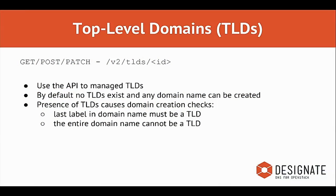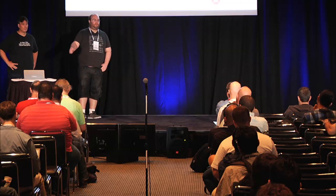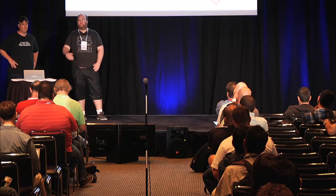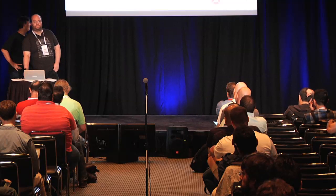In the v2 API, you can choose which top-level domains users are allowed to use. By default it's wide open — if no TLDs are specified, anything goes. But for public cloud operators, this lets you ensure users only register legitimate top-level domains. Because it's an API endpoint, this can be done on the fly without rewriting config files or reloading services. Your support staff can keep adding new top-level domains as they become available.